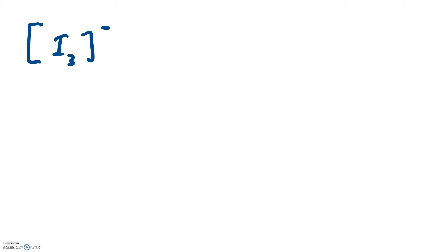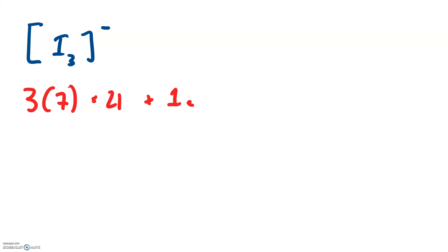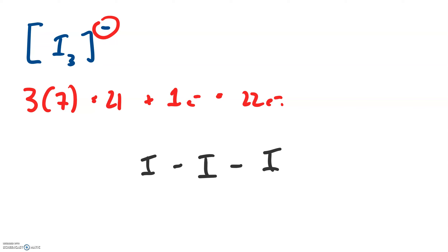This next one is really weird. This is an ion called triiodide, and as you can see from the notation, it's got one extra electron. We'll total up all our valence electrons — we've got three iodines and they each have seven, for a total of twenty-one, plus one extra for the charge, giving us twenty-two. For our skeleton, we have three iodines lined up, and we've used up four electrons in the bonding, leaving a total of eighteen.